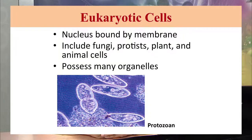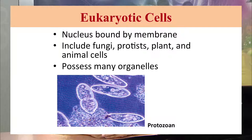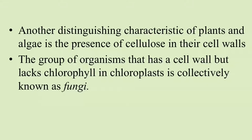The eukaryotic cell contains a true nucleus and most of the membranous organelles. Eukaryotic cells can be further divided into various categories because there are many combinations of organelles present. On that basis, we can differentiate the eukaryotic cell into different kingdoms: plants, fungi, protozoa, algae, and animalia. Plants and algae are distinct from other organisms as they contain chlorophyll, giving them their green color.